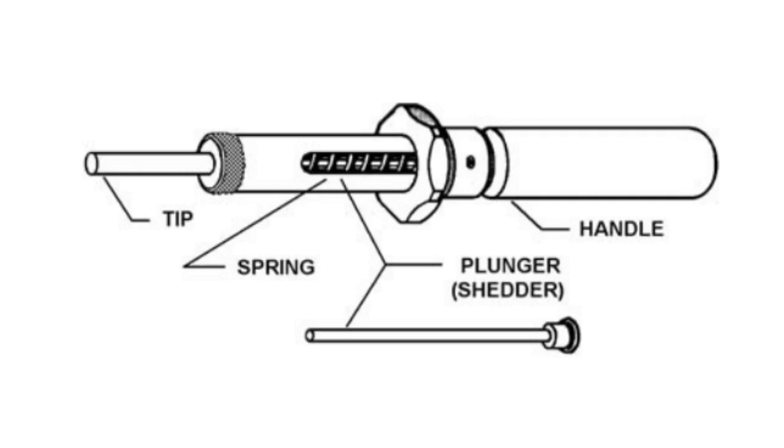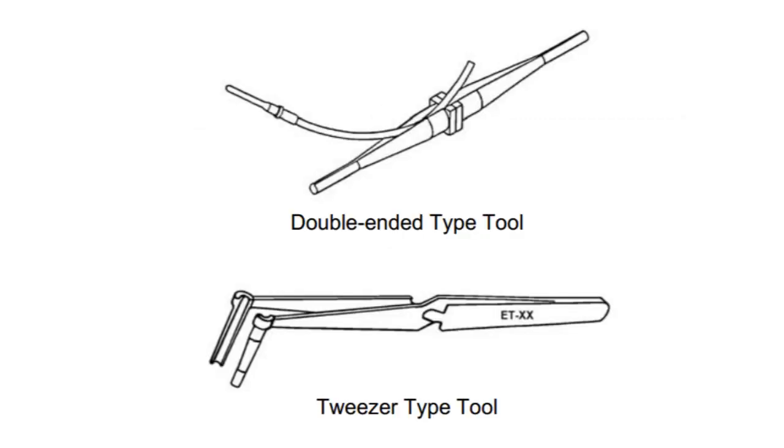Front release removal tools typically consist of a handle, a tip and a plunger, which is sometimes spring-loaded. Rear release connectors require the use of double-ended tools or metal tweezer-type tools.